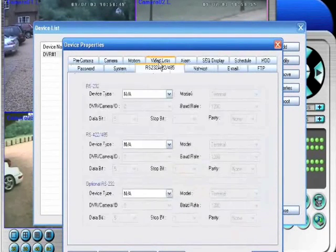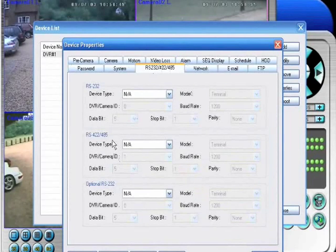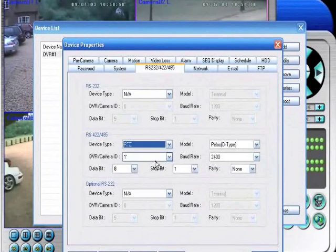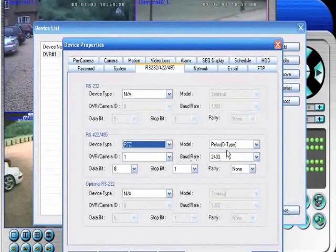In the control panel for the DVR, locate the RS485 settings. You need to tell the DVR what you're connecting, in this case a PTZ camera.